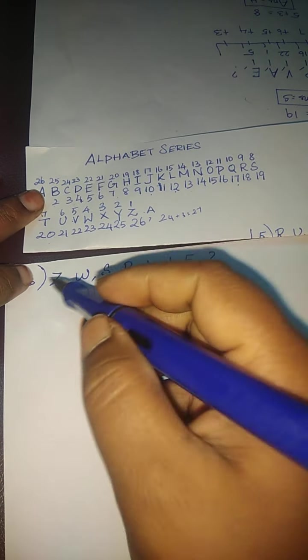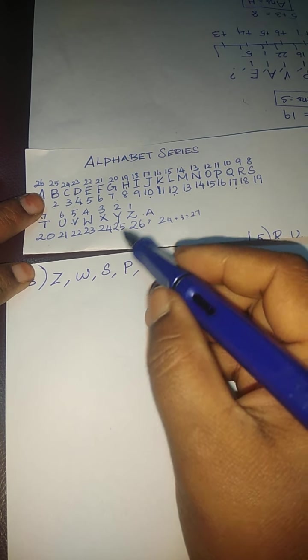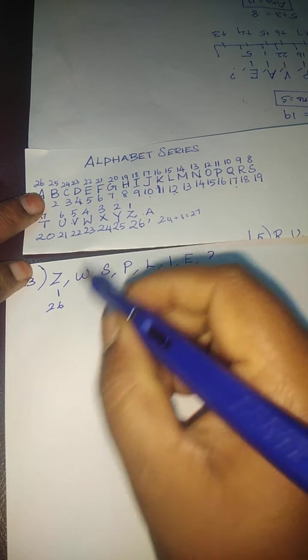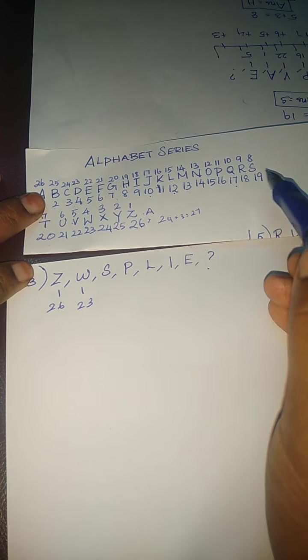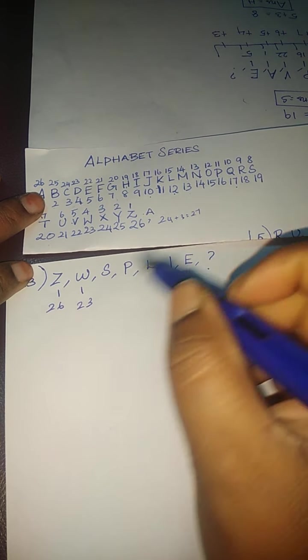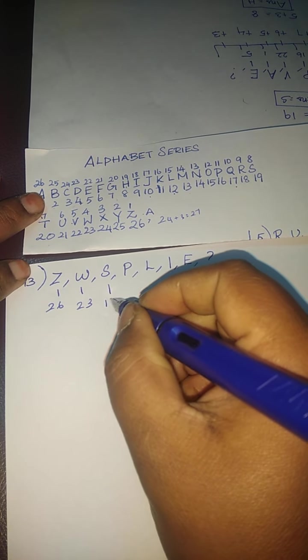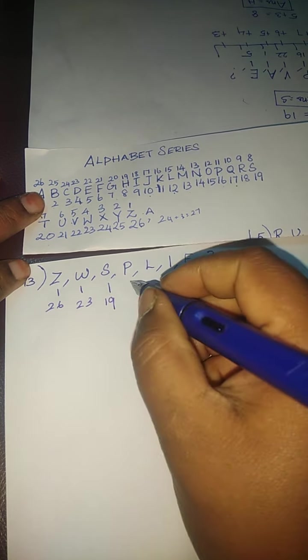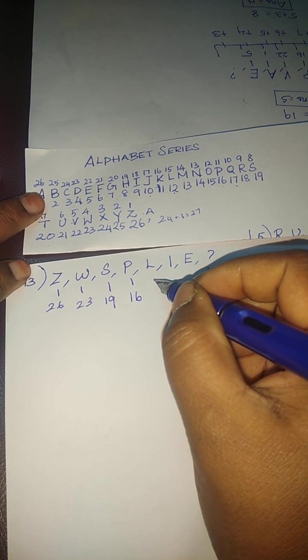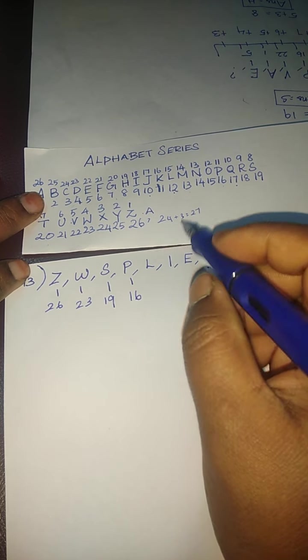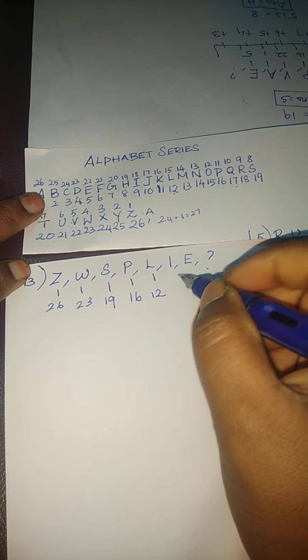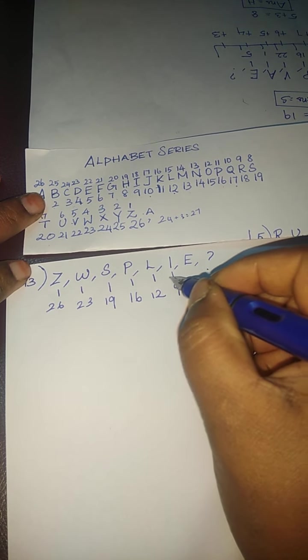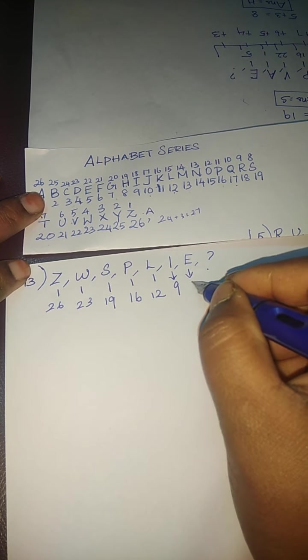Along with the numbers, Z is 26, W is 23, S is 19, P is 16, L is 12, I is 9 and E is 5.